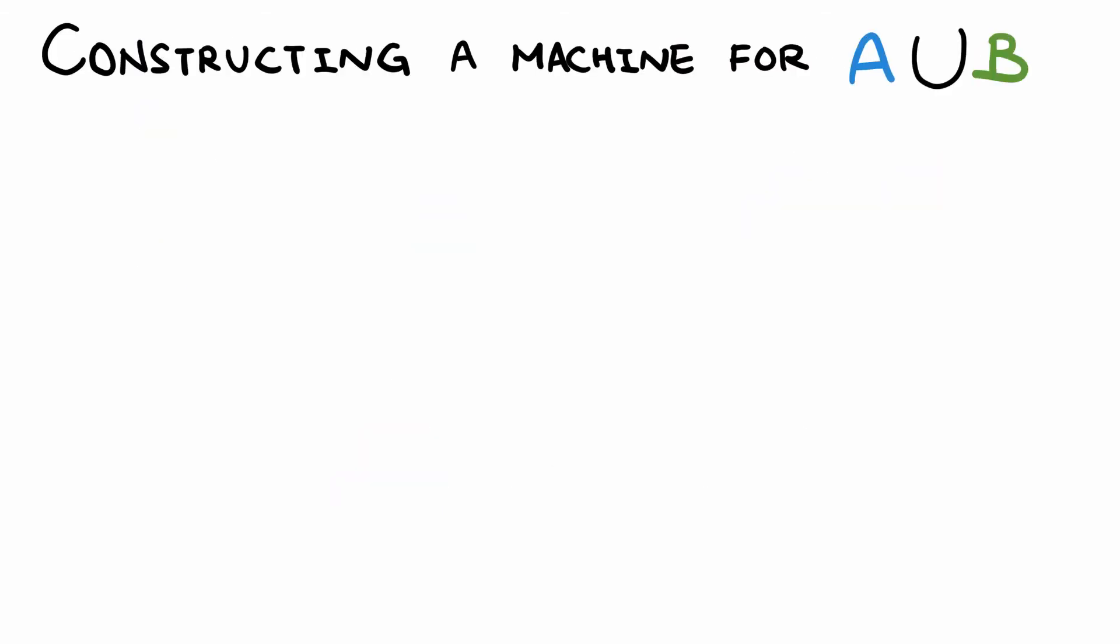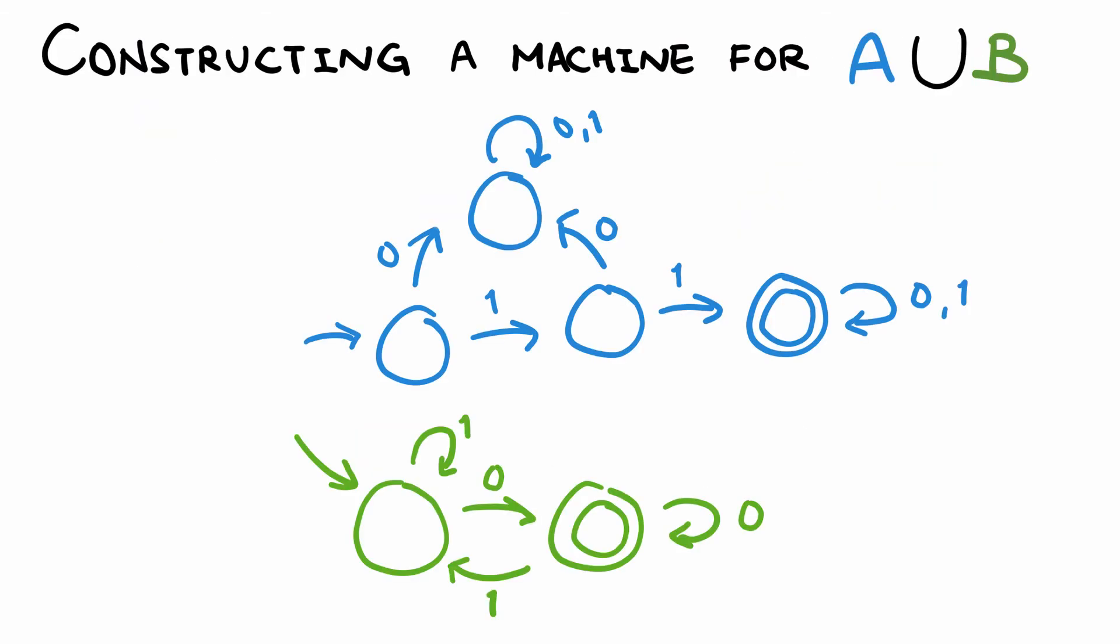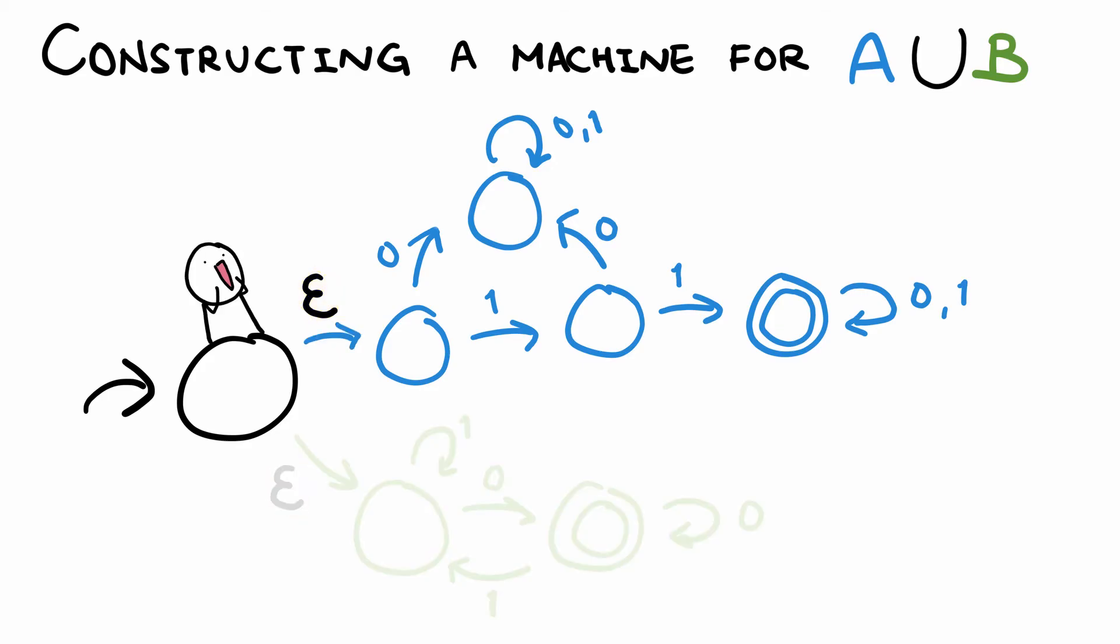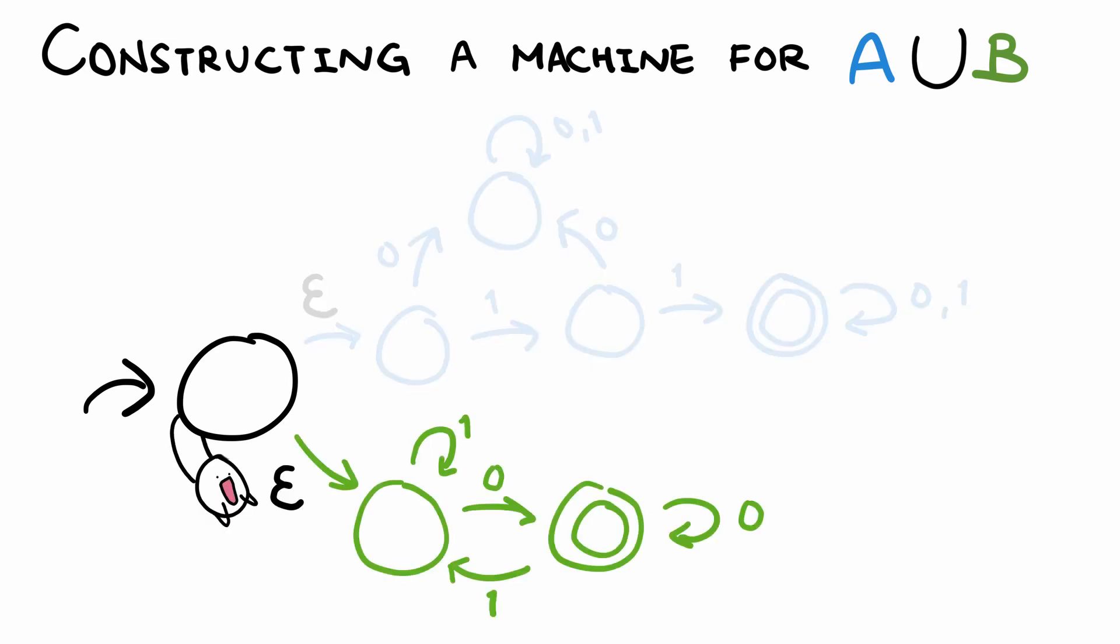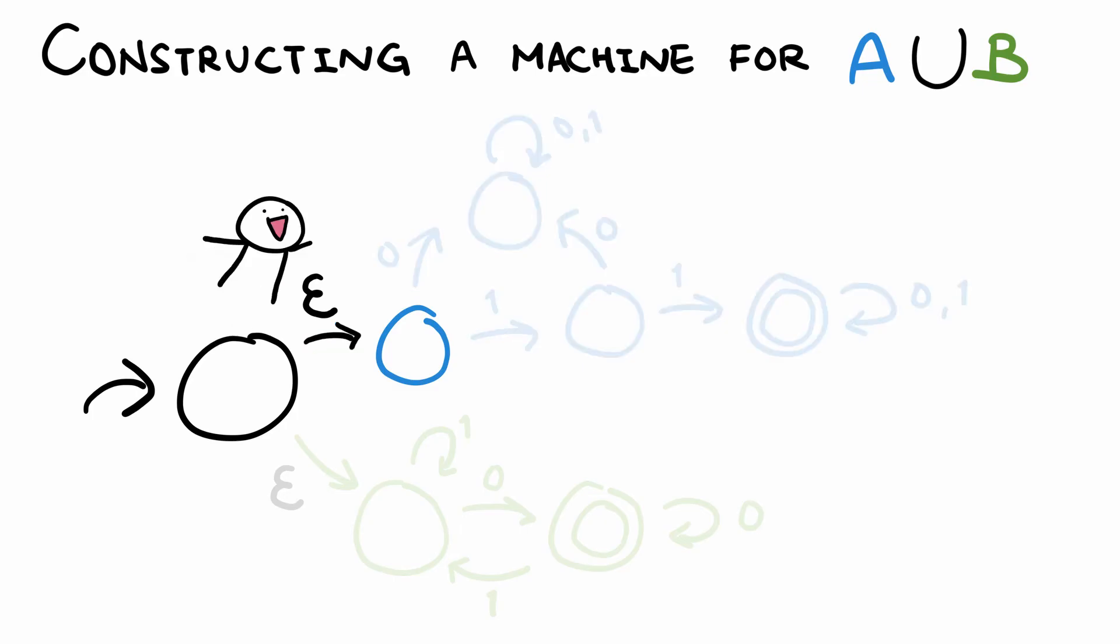We do that by taking the two DFAs and combining them by adding a new start state, which transitions to A's DFA or B's DFA on an empty string. Recall that the empty string transition gives our machine the choice of going either way without reading anything from the input string. Like a free jump that a running machine could take.